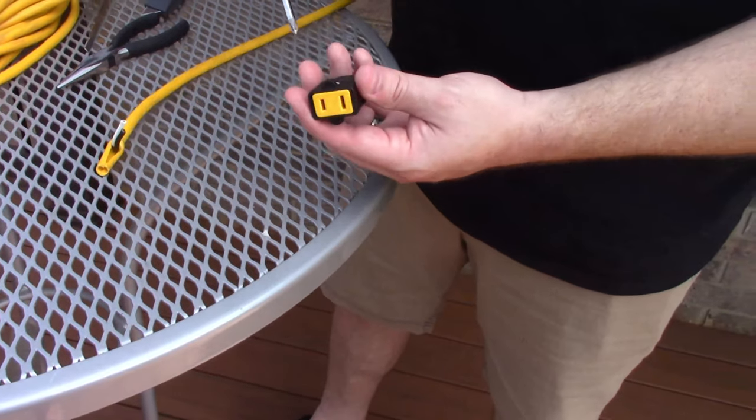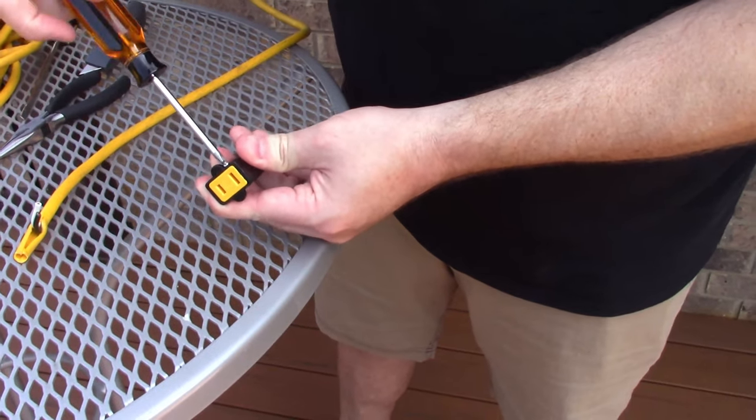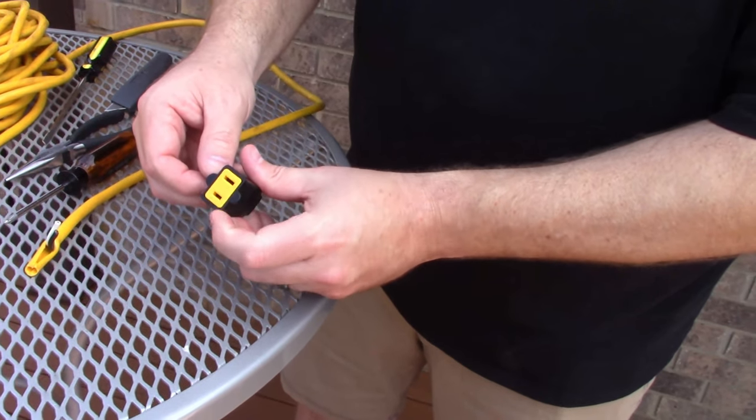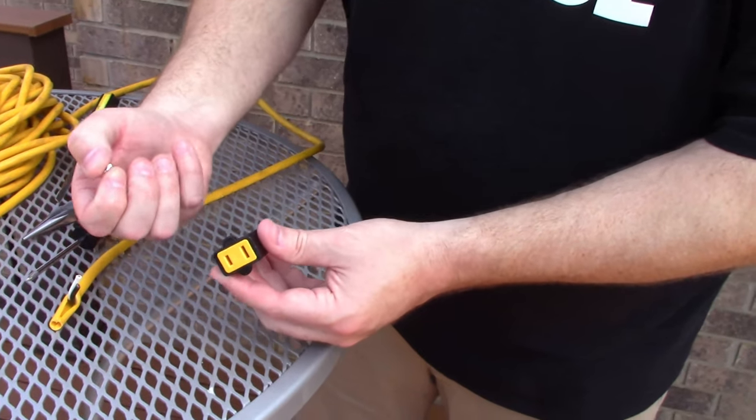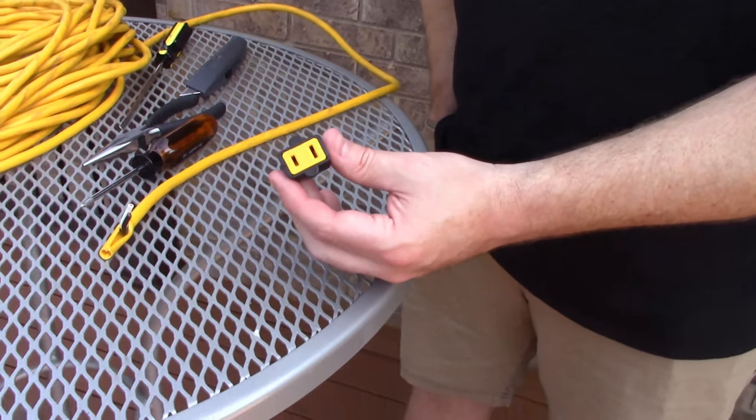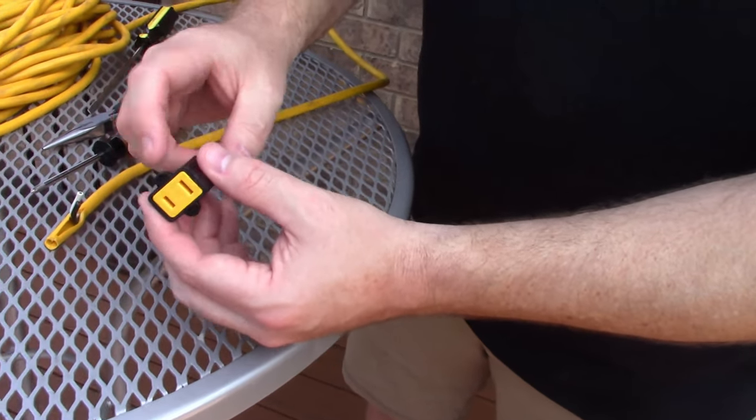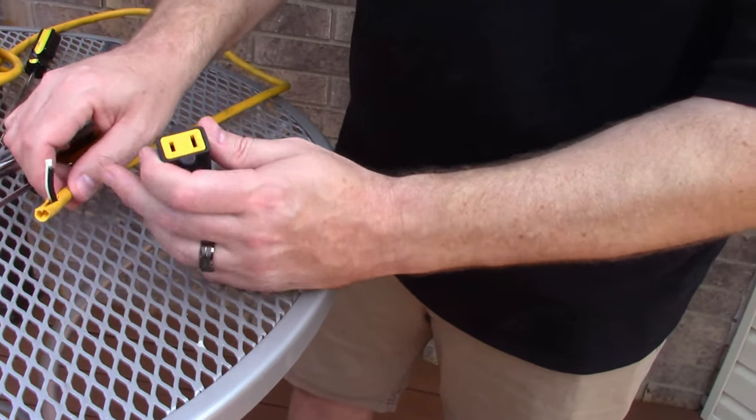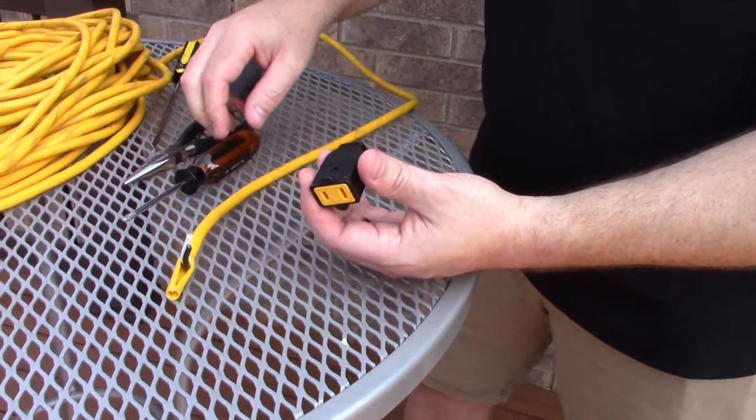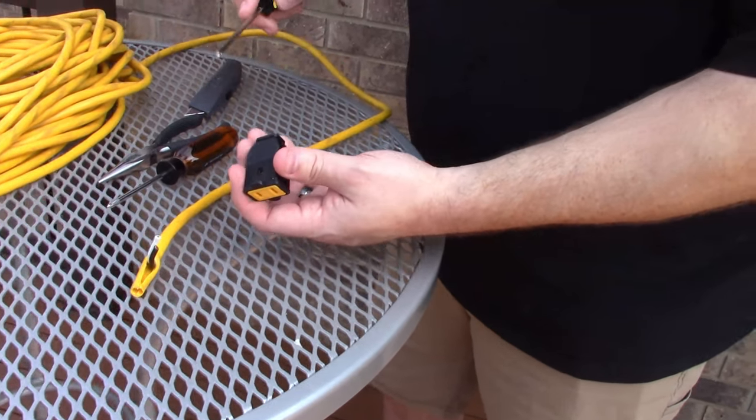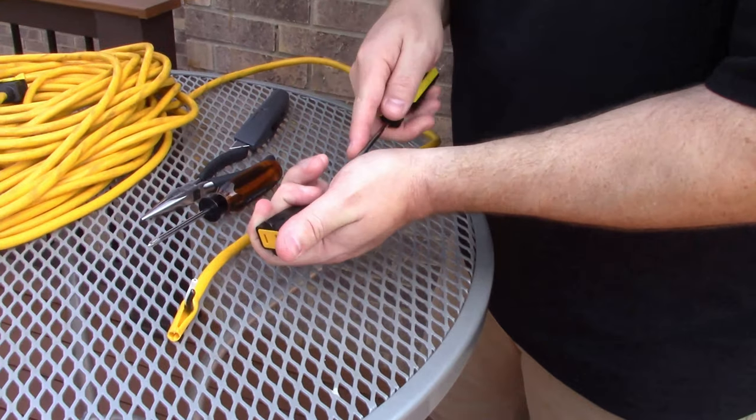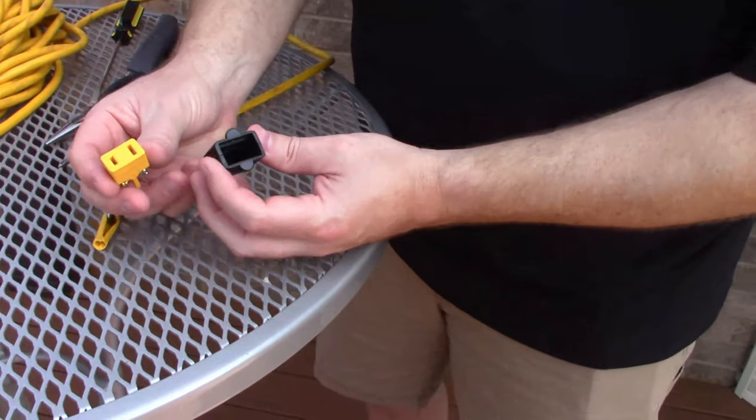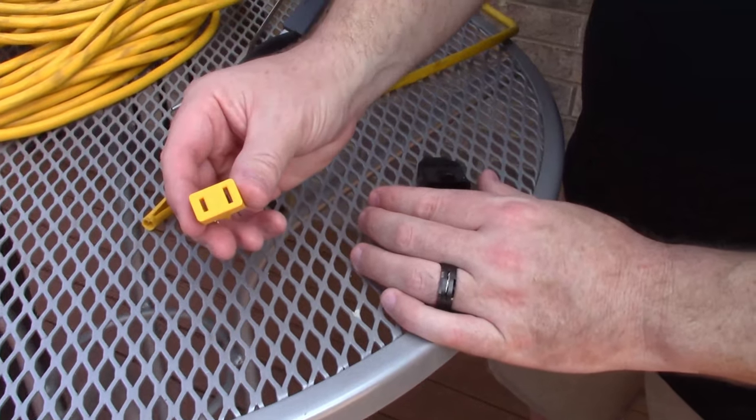On this specific connector, we're going to need to back the Phillips screw out. Each one of these that you buy is different. This is a two-prong cord. Most often you see three-prong that have a ground. You're going to take the screw out. I'll put it in my pocket. On this type of connector, you have to push from the back and this pops out. That will expose the connectors that we need to connect the black and white wire to. You can see this is the sleeve. Here's the connectors.